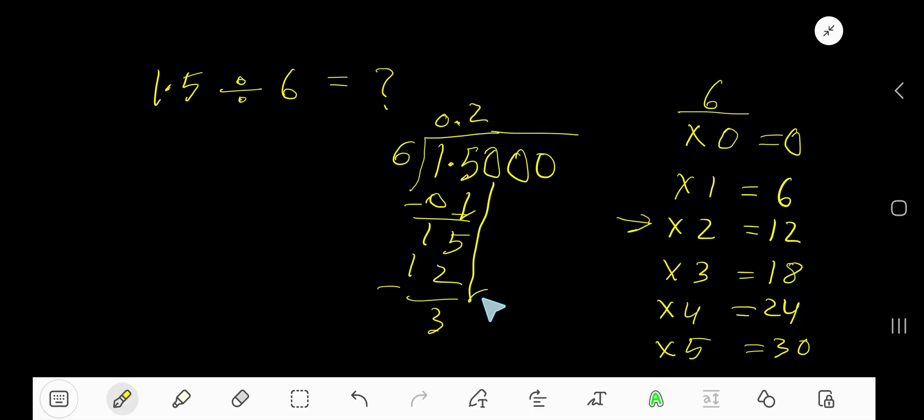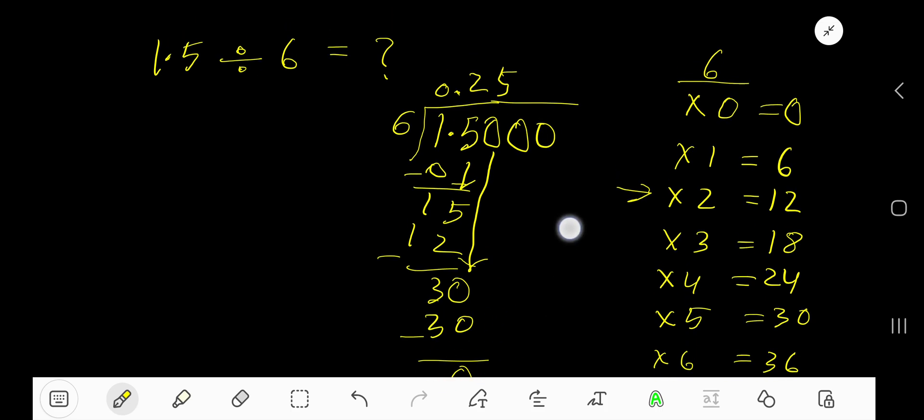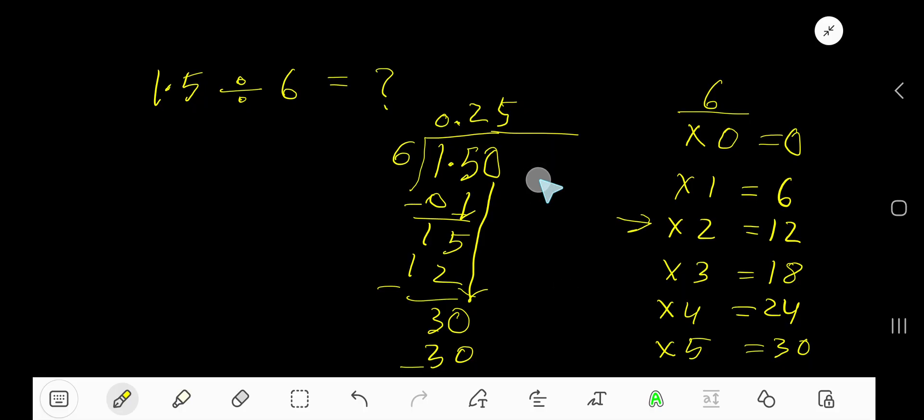5 times 6 is 30, subtract. Since our remainder is 0, we are done. So 0.25 is our answer.